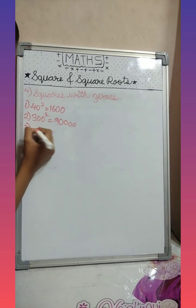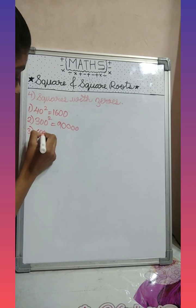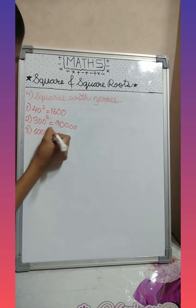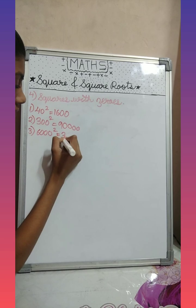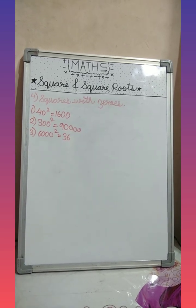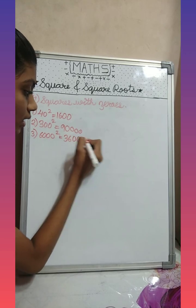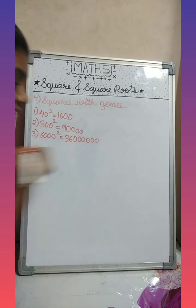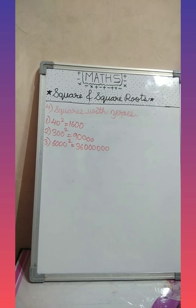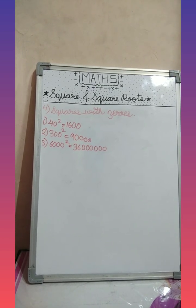Let's see last example: six thousand. Now six square is thirty-six. Now we will double the number of zeros: one, two, three, four, five, six. So this was the trick for finding out squares of zeros.